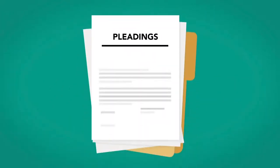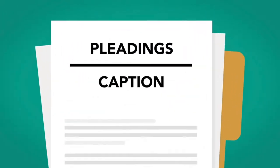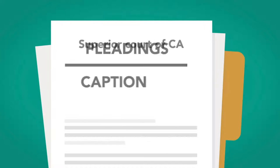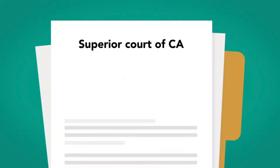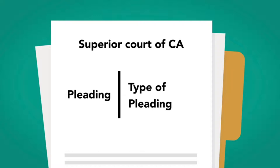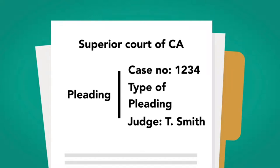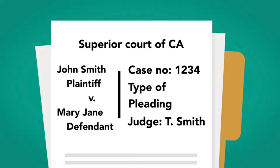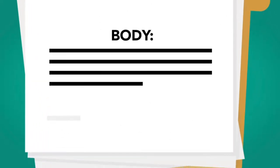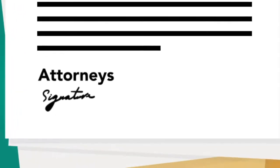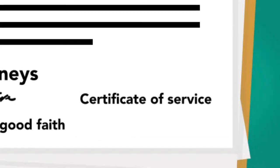All pleadings have the same basic structure, starting with the caption at the top of the first page. The caption states the name of the court at the top and, on the right side of the pleading, the type of pleading, the case number or docket number, and the name of the judge. On the left side is the name of the parties to the pleading, starting with the plaintiffs. Under the caption is the body of the pleading. After the body comes the signature lines for the attorneys, attesting that it is filed in good faith, and a certificate of service, telling the court how the pleading was delivered to the other side.